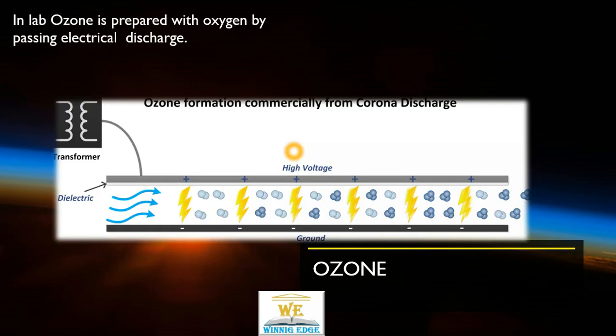How is it formed? We can prepare ozone by passing oxygen through electric discharge. When we pass electric discharge, what happens?